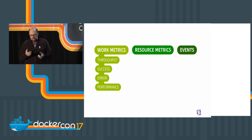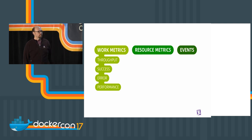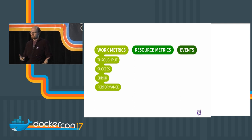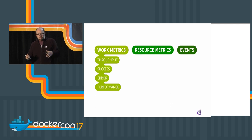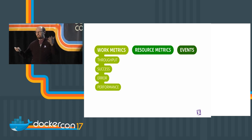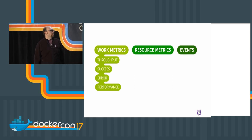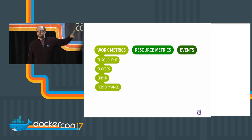For throughput — if we're dealing with Nginx, it's the number of requests processed per second. Success and errors are what percentage of those result in a 200 response code versus a 404 response code. Those are the key metrics. Work metrics are where you spend most of your time — that's what you really pay attention to, and everything else just adds context.